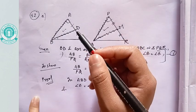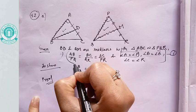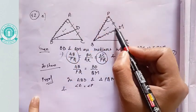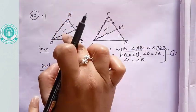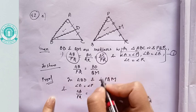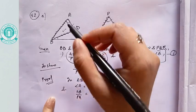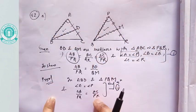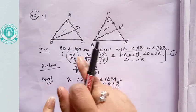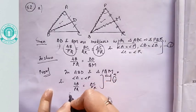Try to identify what is equal in the corresponding sides, or which angles are equal, so we can apply a similarity criterion. From equation 1 (the given similarity), angle A equals angle P. Also, from equation 1, AB/PQ equals AC/PR.